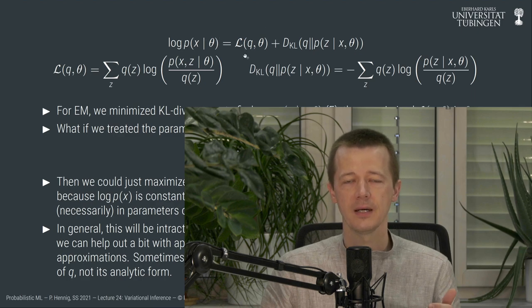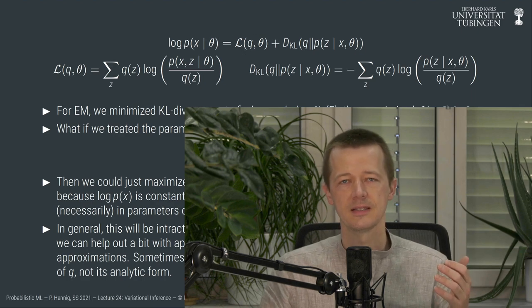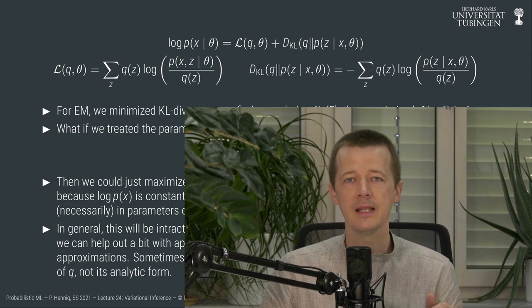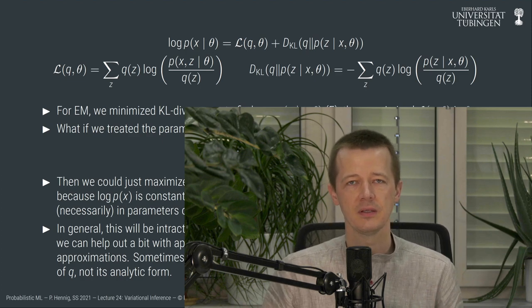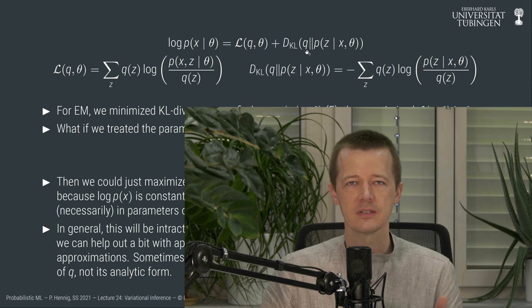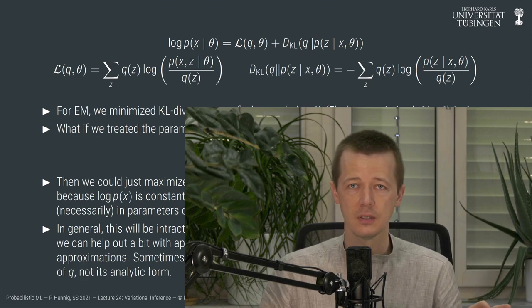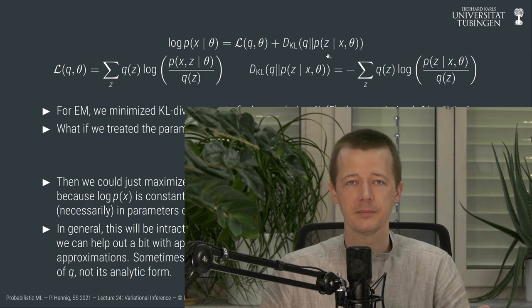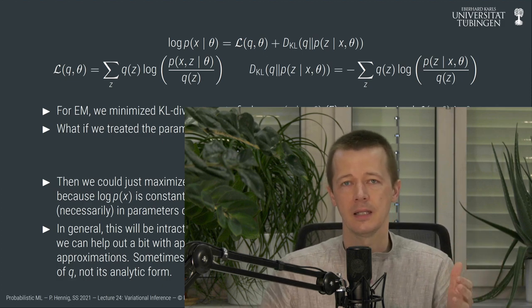One term, which we have come to call either the expected complete data log likelihood, the negative variational free energy, or the ELBO — the evidence lower bound — all words for the same thing, and the KL divergence between q and the conditional distribution for the variable z under p.